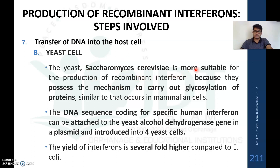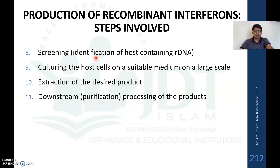Yeast cells are more suitable as the host. Saccharomyces cerevisiae is the most suitable organism for recombinant interferon production because it possesses glycosylation machinery similar to mammalian cells. The DNA sequence coding for specific human interferon is attached to the yeast alcohol dehydrogenase gene in a plasmid and introduced into yeast cells. This yields interferon at several-fold higher levels compared with bacterial hosts.